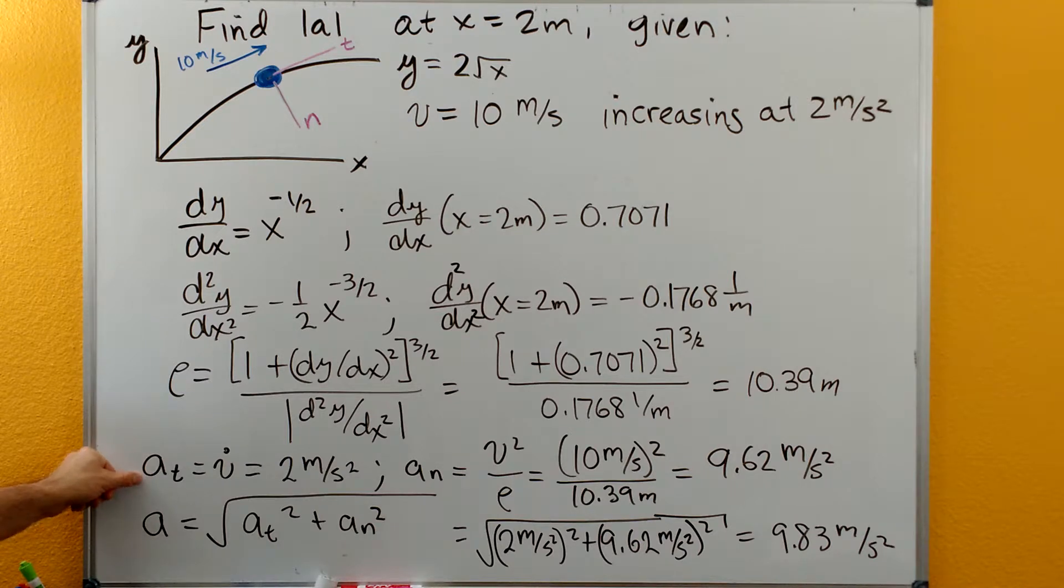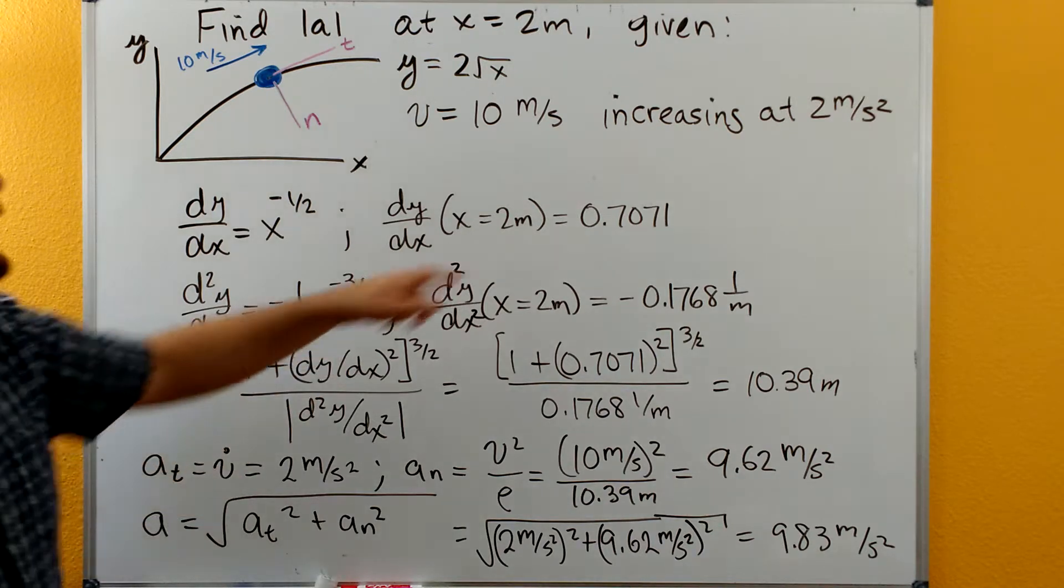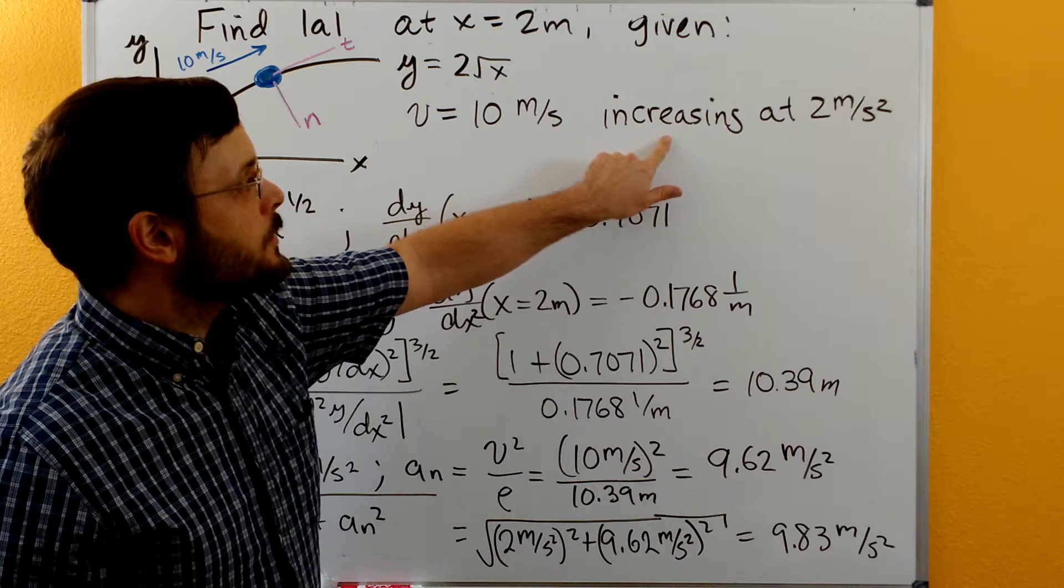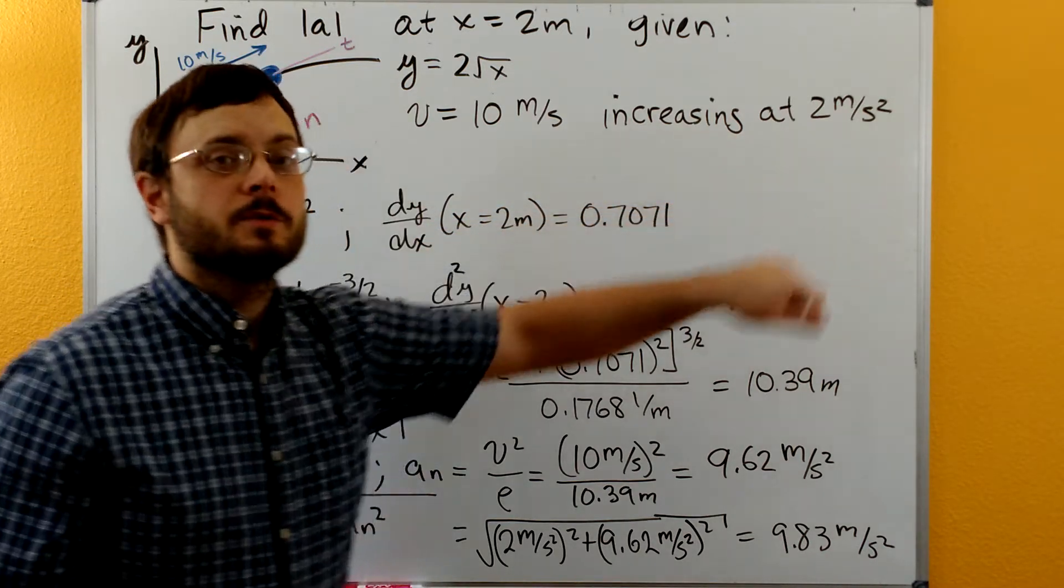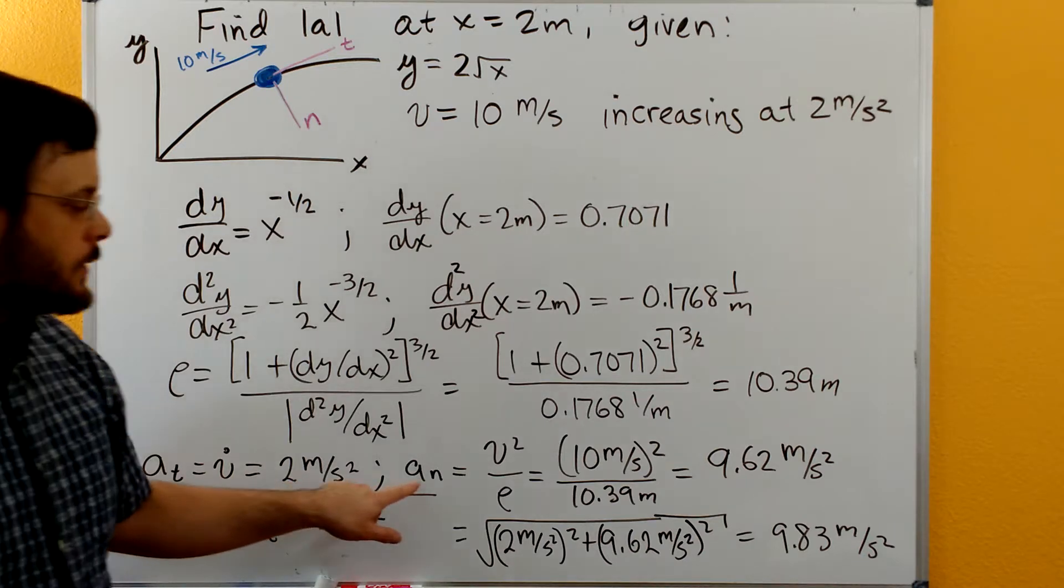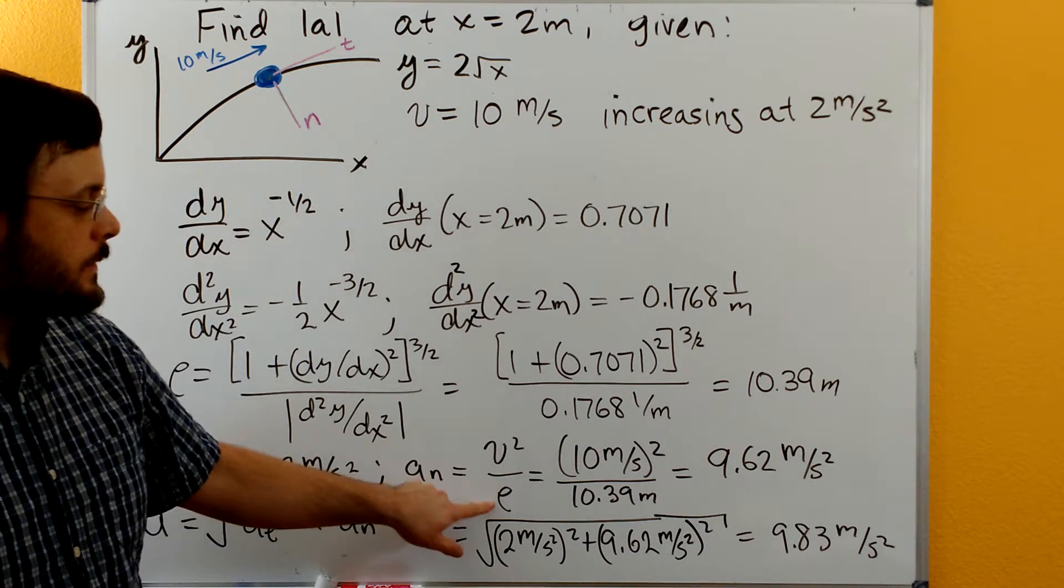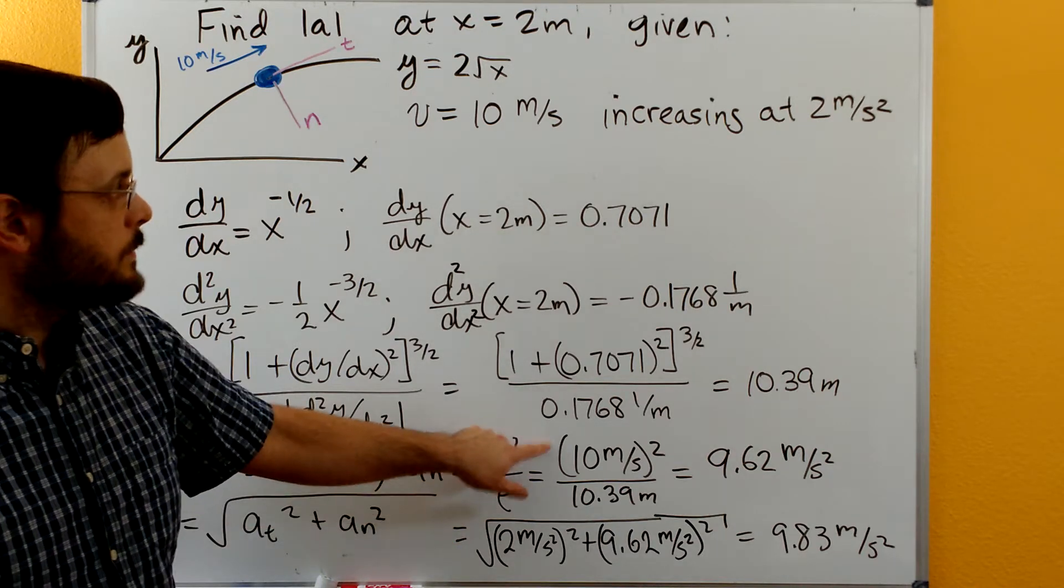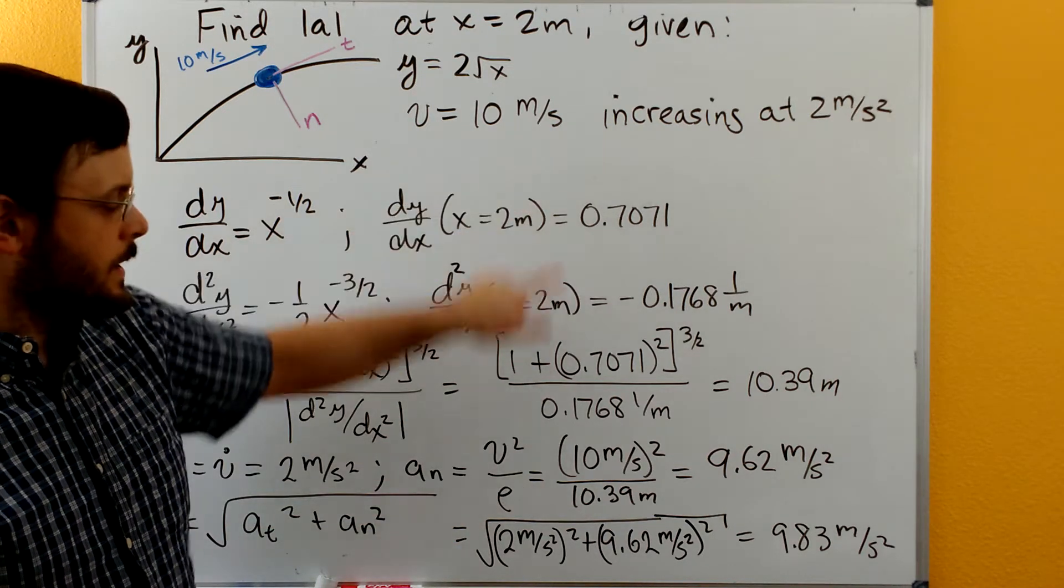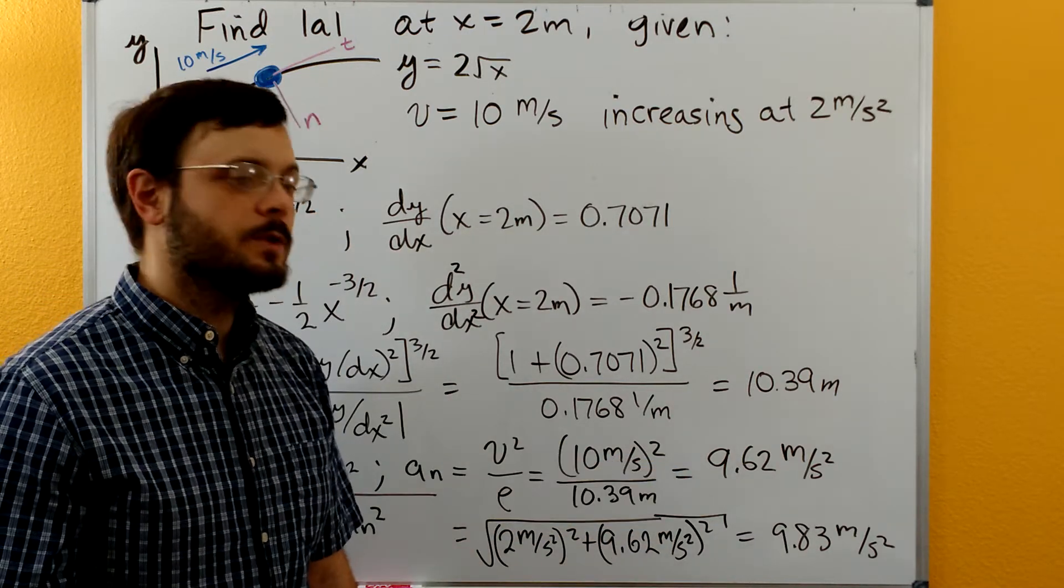And then your tangential acceleration is just going to be your first derivative of your speed, so your first derivative of your scalar velocity. We know that our scalar velocity is increasing at two meters per second squared, so that's our tangential acceleration, and then our normal acceleration is going to be equal to v squared divided by the radius of curvature, so we plug in our 10 meters per second, and we plug in our radius of curvature, we get 9.62 meters per second squared.